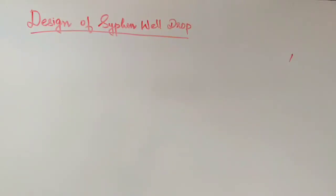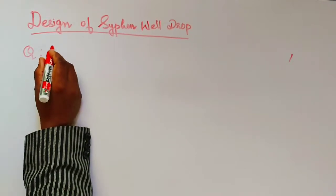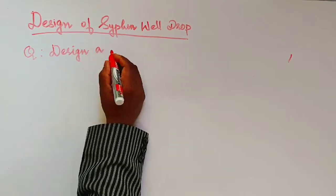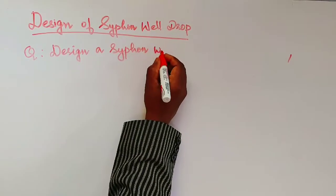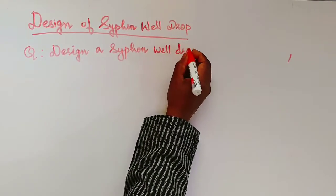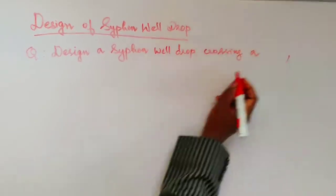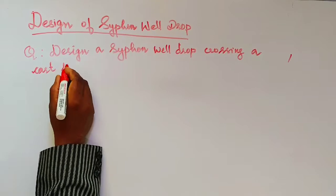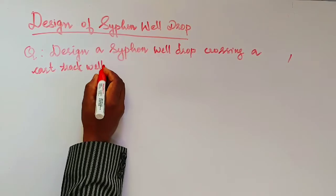Let's take an example problem. The question is: design a siphon well drop crossing a cart track with the following hydraulic particulars.